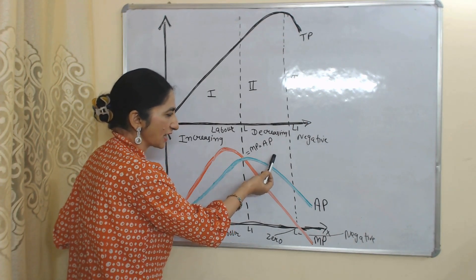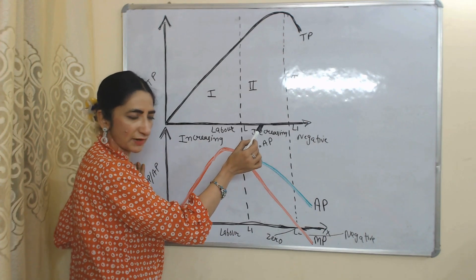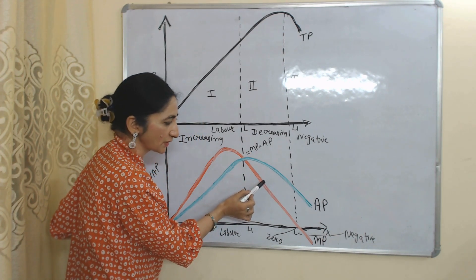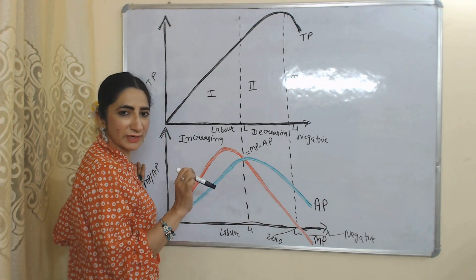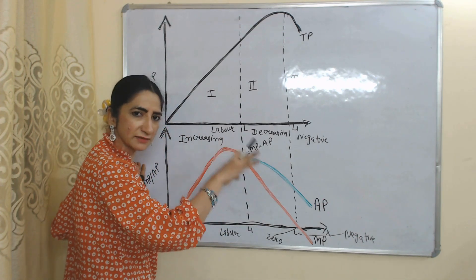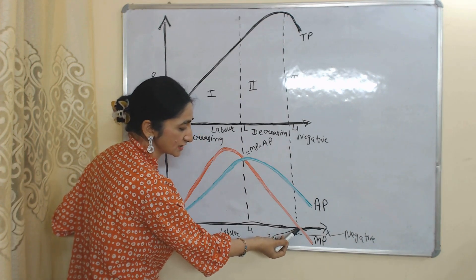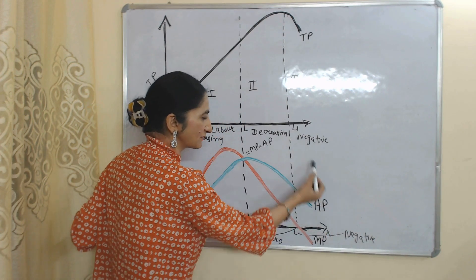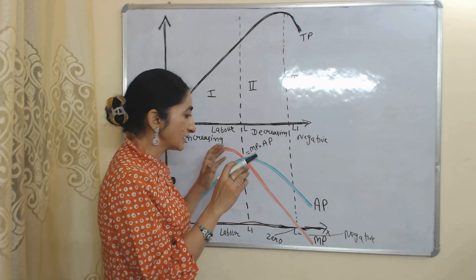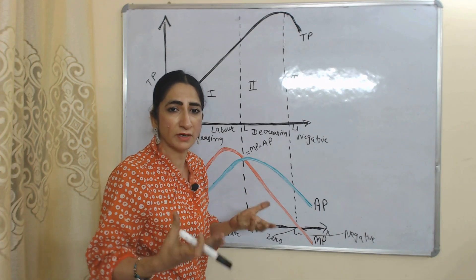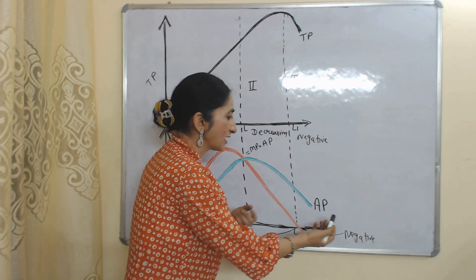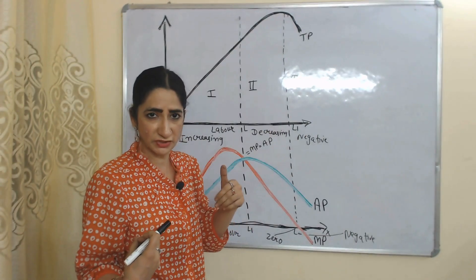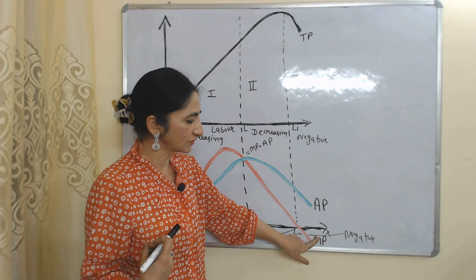After that, the second stage begins — decreasing return to variable factor. Marginal product starts reducing and is now less than average product, due to over-utilization of land. At the end of the second stage, at point L2, marginal product becomes zero. Then the third stage starts — negative return to variable factor. There is extreme over-utilization of land, so additional laborers give no output. Even production reduces because of additional labor, making marginal product negative during the third stage.